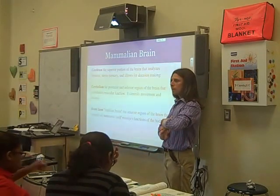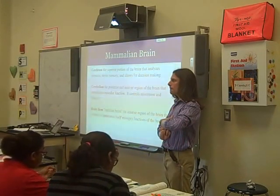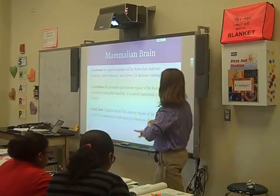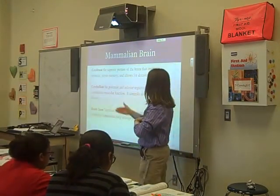The brain stem is at the bottom, and it controls autonomic functions. Look at the word 'autonomic' — I've color-coded it to help you learn it. 'Auto' means self, and 'nomic' means to manage. So autonomic means self-managing — things your body manages on its own without you thinking about it.